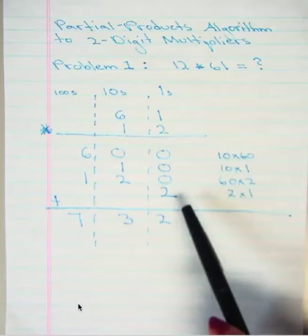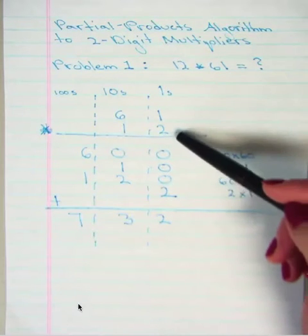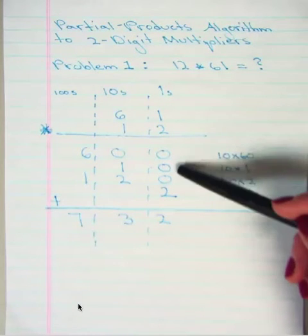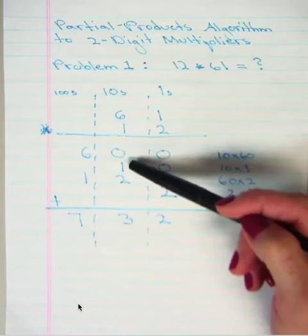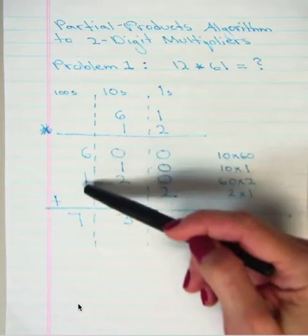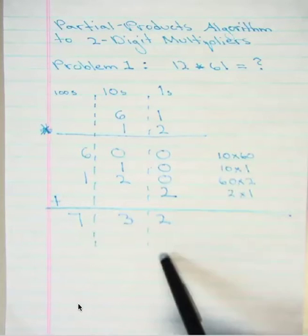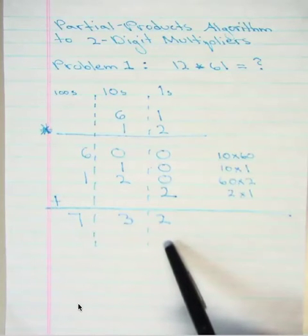The next thing you do is add your digits lined up very nicely. You add your ones digits, so you've got 2, and then 2 plus 1 is 3, and then 6 plus 1, which is 7. Your answer being 732, and that is an example of how you do the partial products algorithm method.